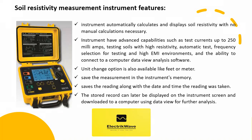Nowadays advanced measuring instruments are available, some of the features are shown here. The instrument automatically calculates and displays soil resistivity with no manual calculations necessary. Instruments have advanced capabilities such as test currents up to 250 milliamps, testing soils with high resistivity, automatic test frequency selection for testing in high EMI environments, and the ability to connect to a computer data view analysis software. Unit change options are also available, like feet or meter. You can save measurements in the instrument's memory, which saves the reading along with the date and time. The stored record can later be displayed on the instrument screen and downloaded to a computer using data view for further analysis.